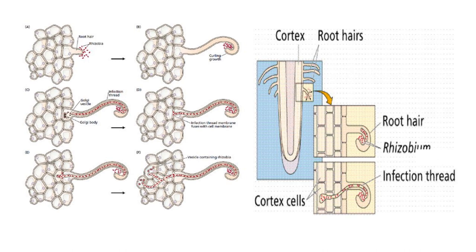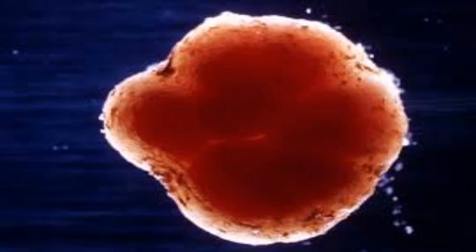Rhizobium species are host-specific, meaning one rhizobium species is able to nodulate or infect a specific group of leguminous plant species — this is called a cross-inoculation group. Species of rhizobium differ in their ability to fix nitrogen, so screening is essential to select the most efficient nitrogen-fixing species for preparation of biofertilizer.